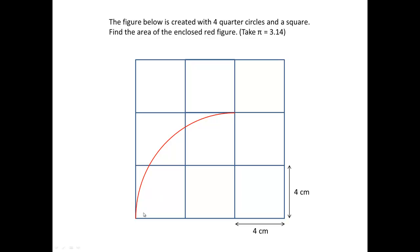Next, we have this quarter circle here, which is constructed based on all the squares. Next, we have this quarter circle here, which is constructed based on these four squares. And finally, the last quarter circle is constructed based on the middle square.